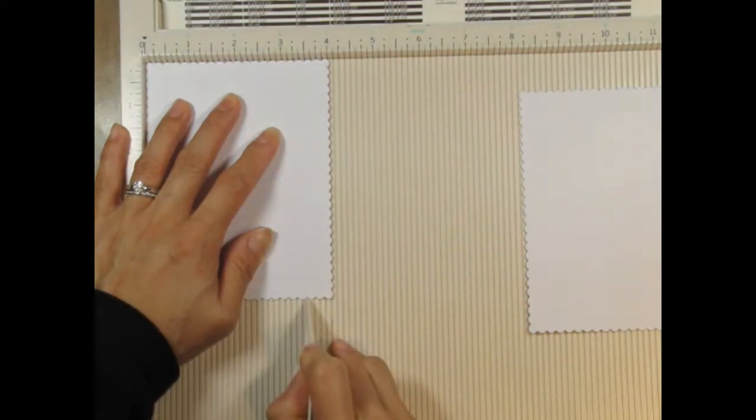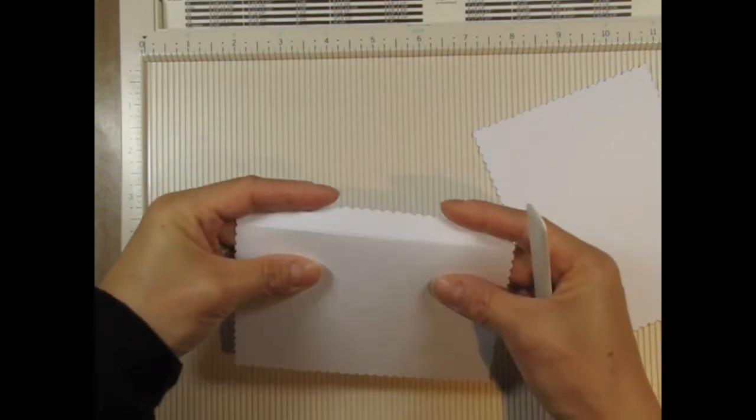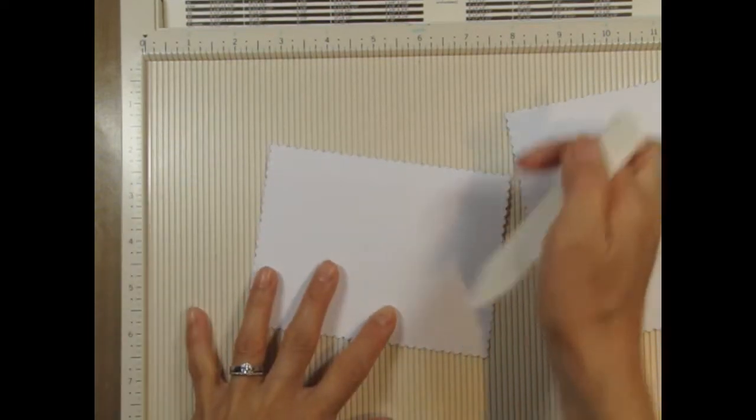And then score the back piece so that you have a nice clean edge to fold along when you open the card and write on the inside.